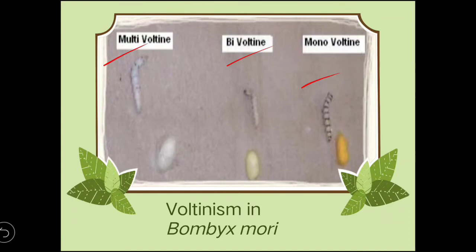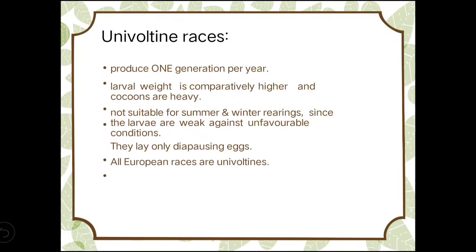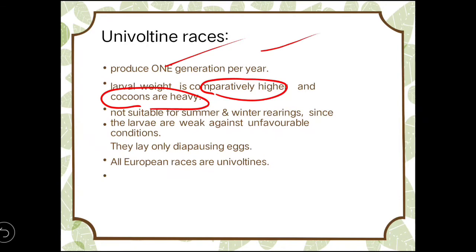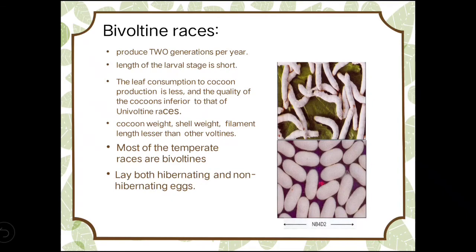In Bombyx mori, even the cocoon color changes depending on the voltine type. Univoltine races produce one generation per year. The larval weight is comparatively higher and cocoons are heavy. However, they are not suitable for summer and winter rearing as larvae are sensitive to unfavorable conditions. They lay only diapausing eggs, and all European races are univoltine.